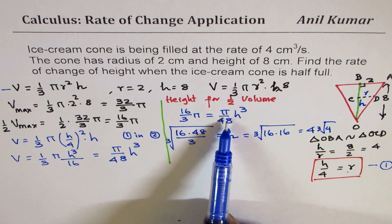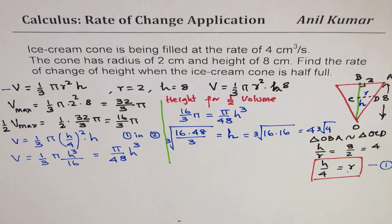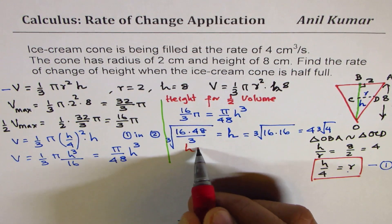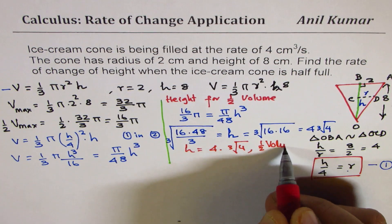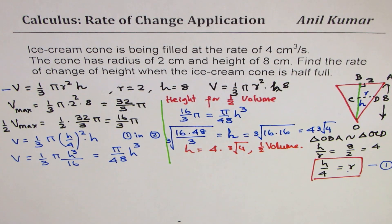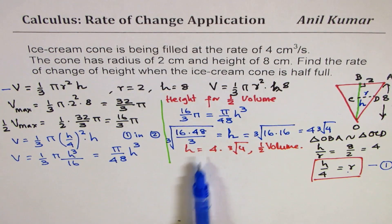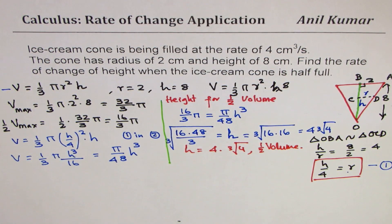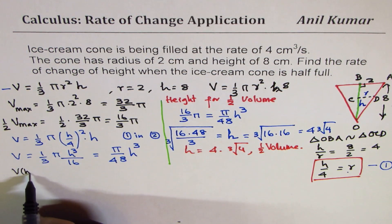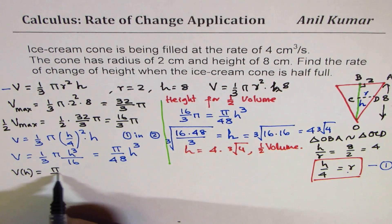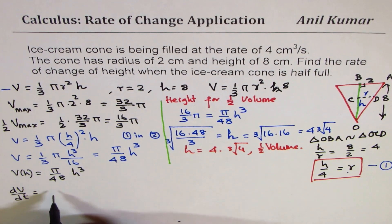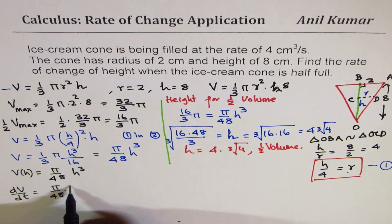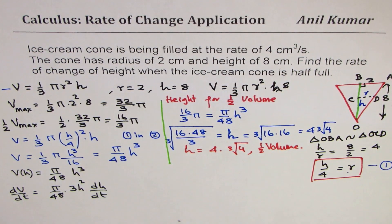So when the volume is half, height is 4∛4. So we say height equals 4∛4 for half volume. Now we can find rate of change at this height. So we know the formula now. Volume as a function of height is (π/48)h³. So the derivative with respect to time, we say dV/dt will be equal to (π/48) times 3h²(dh/dt). Perfect.